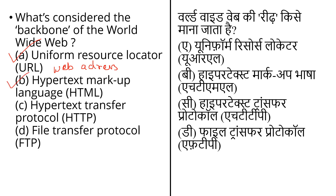The second option is Hypertext Markup Language, that is HTML. HTML is the basic scripting language used by the web browser to render pages on the World Wide Web. Hypertext allows the user to click a link and be redirected to the web page referred to by the link. The third option is Hypertext Transfer Protocol, that is HTTP. HTTP is an application layer protocol in the internet protocol suite for distributed, collaborative, hypermedia information systems. HTTP is the foundation of data communication for the World Wide Web, where hypertext documents include hyperlinks.